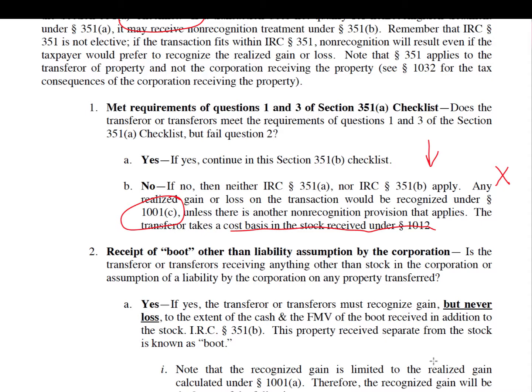The first type is boot other than liability assumption — any property received by the transferor other than stock in the corporation, not dealing with liability assumption. If the transferor receives this kind of boot, the transferor must recognize gain, but never loss. The idea here is anti-abuse: shareholders would specifically require the corporation to provide boot so they could take a loss. This is an anti-abuse rule — must recognize gain, but never loss. Loss cannot be recognized under 351B.